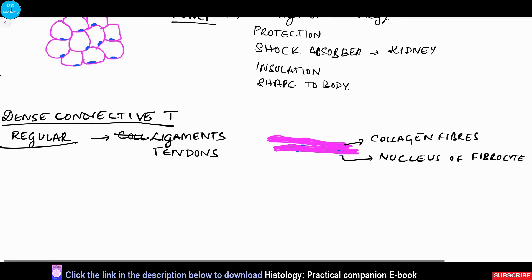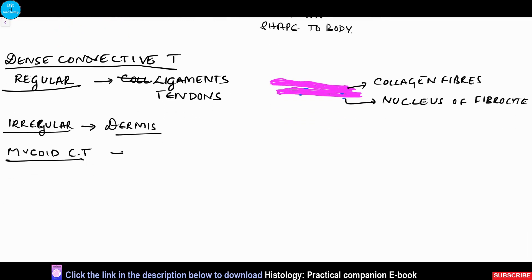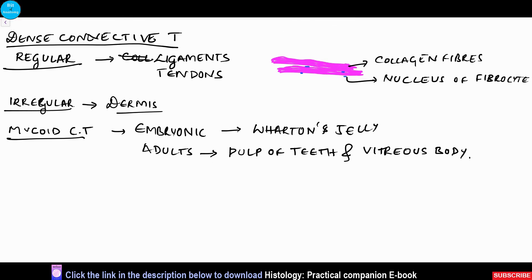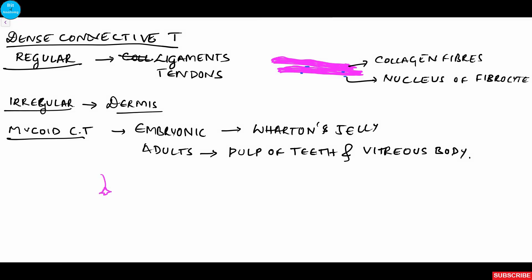In the irregular type, the connective tissue is densely arranged but dispersed — an example is the dermis of the skin. The last type is the mucoid connective tissue, which is embryonic tissue present during intrauterine development. Examples include Wharton's jelly of the umbilical cord. In adults it is seen in the pulp of the teeth and the vitreous body of the eyeball. In this tissue we see slightly larger star-shaped fibroblast cells with very long processes that communicate with the processes of adjacent cells.